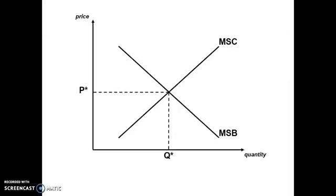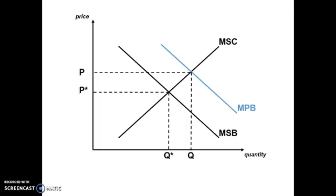Looking at the diagram, we start with the socially efficient level and show that the personal benefit of products — using the cigarette example — is greater than society's benefit. The individual wants cigarettes more than society would like there to be cigarettes. So the actual equilibrium quantity Q is greater than Q*. Q* is the ideal, but we are getting more cigarettes than society would like. That wedge between Q and Q* represents welfare loss — how much society is losing because individuals perceive a benefit that society does not enjoy.